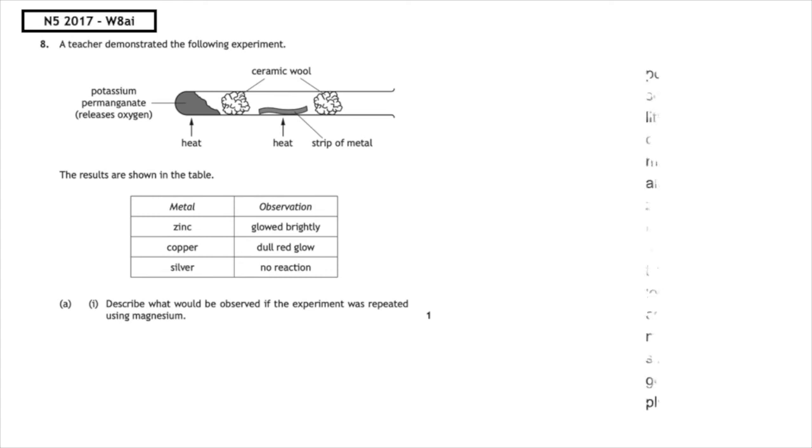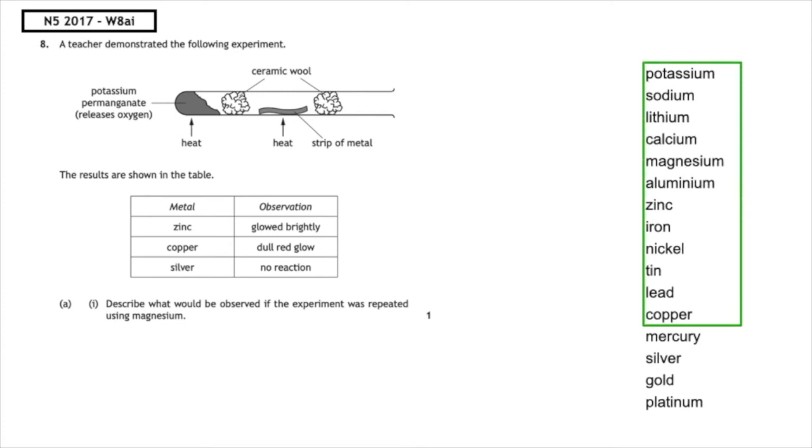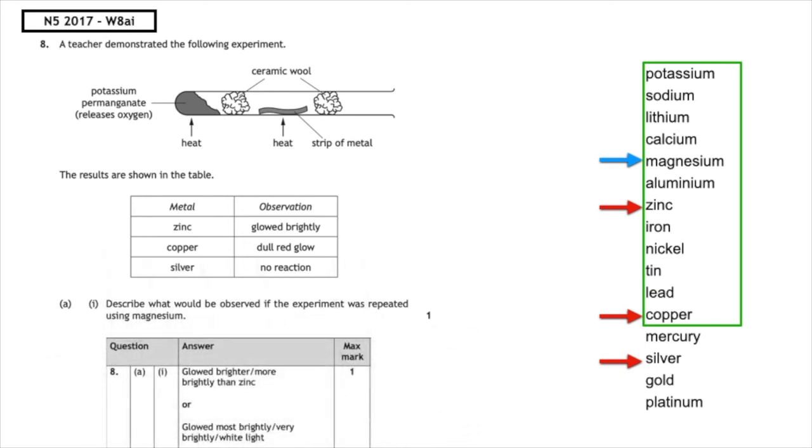The first thing that we have to look at is the reactivity series. We can see that the glow increases in terms of its brightness. Magnesium is above zinc in the reactivity series, which means magnesium will glow with a bright white light.